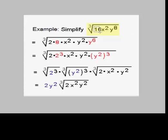Now if we look at 16, 16 is not a perfect cube, but 8 is. So we write 16 as 2 times 8. 8 is our perfect cube. x squared —